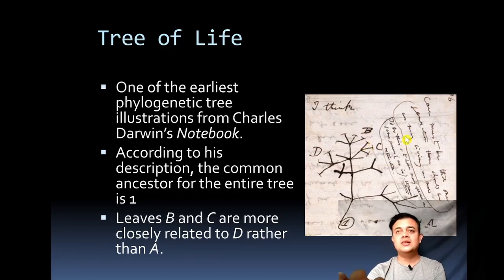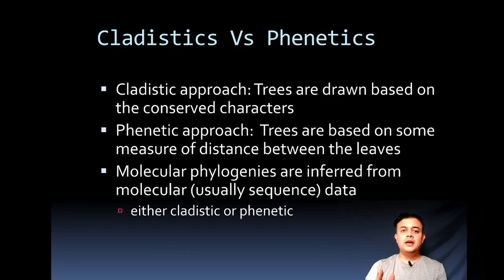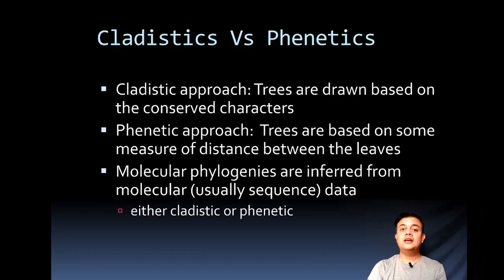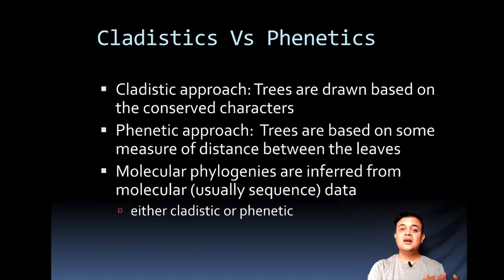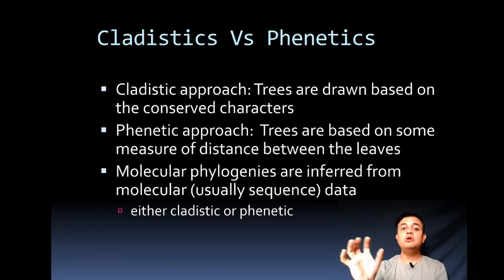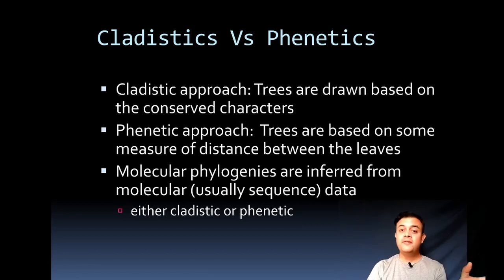In summary, cladistics and phenetics are two different conceptual approaches for constructing trees or classifying organisms. Phenetics is all about the current state of affairs, disregarding what happened in the past. Cladistics is all about the evolutionary legacy. Cladistics tends to be much more accurate and natural, while phenetics is much faster though less accurate.